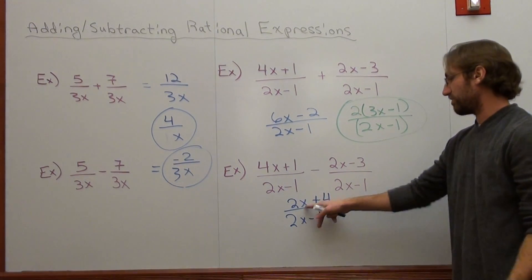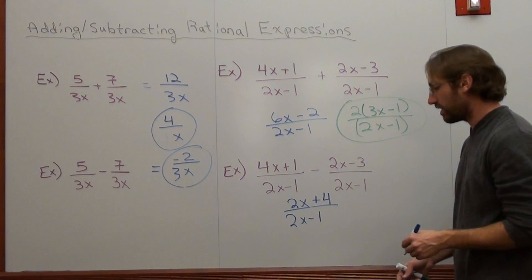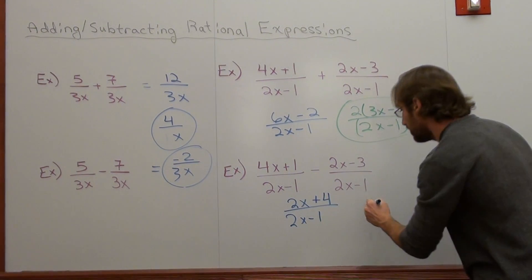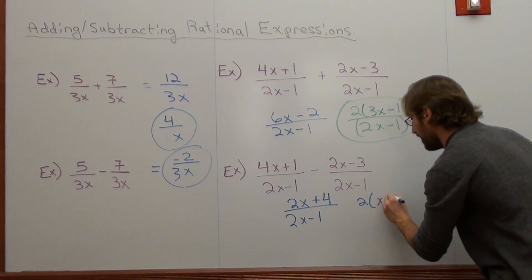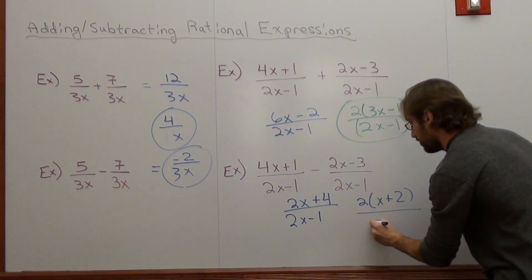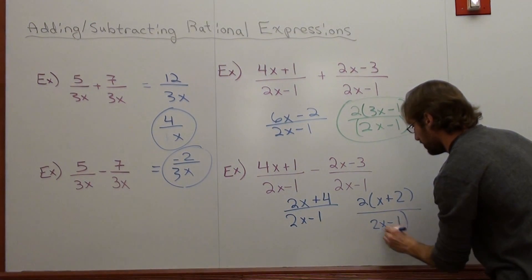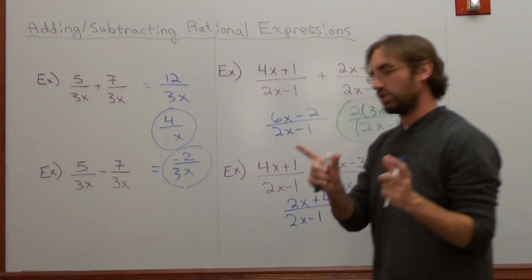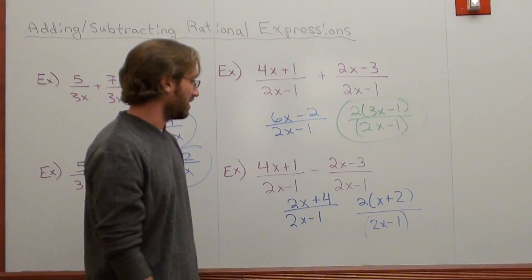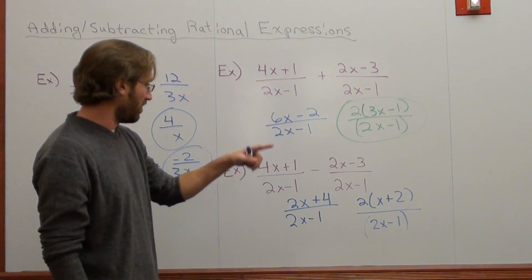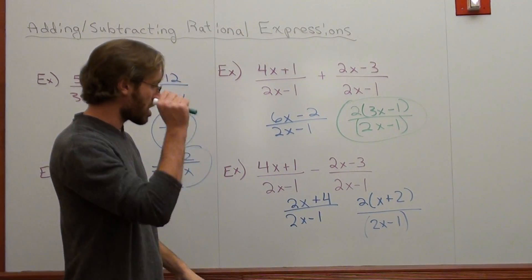Careful. I can actually factor out the numerator with the GCF out of the numerator. So if I take out a 2, I've got x plus 2 over 2x subtract 1. But parentheses around the denominator, it never hurts. It's 2x plus 4. Done.